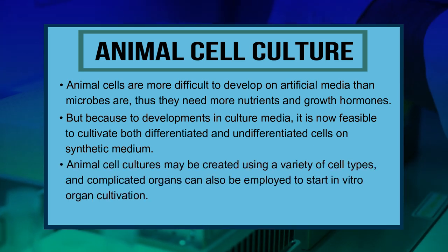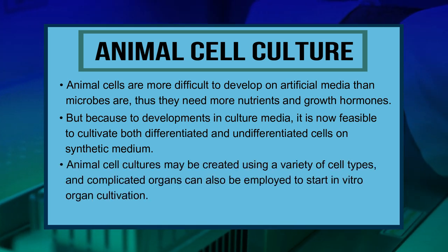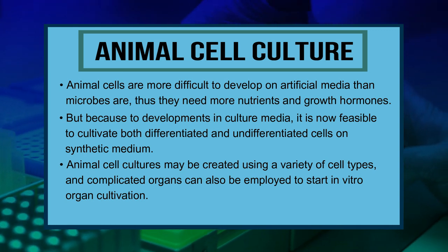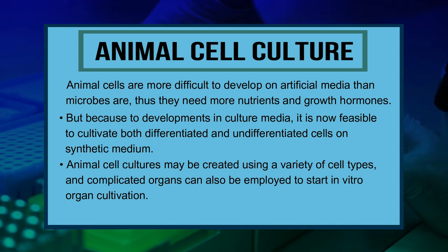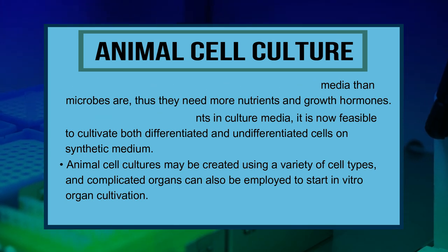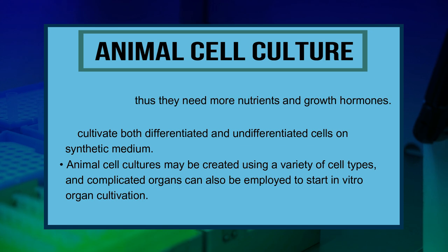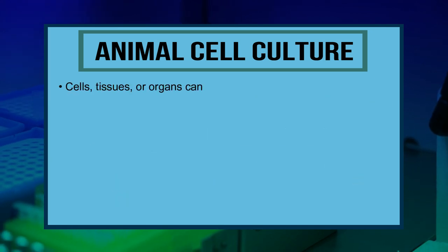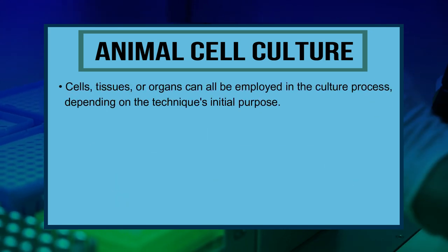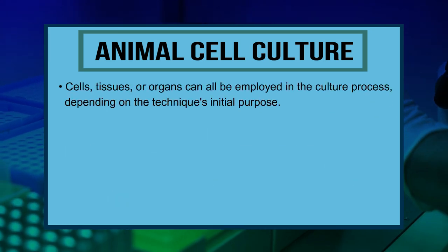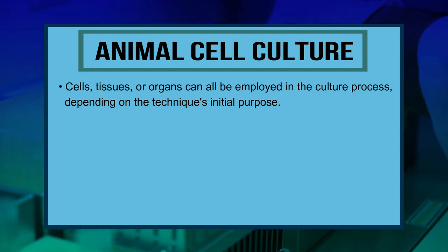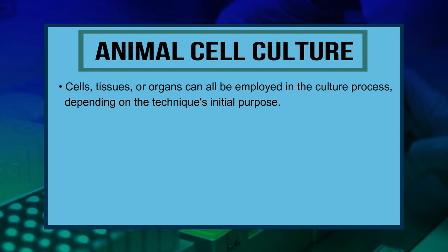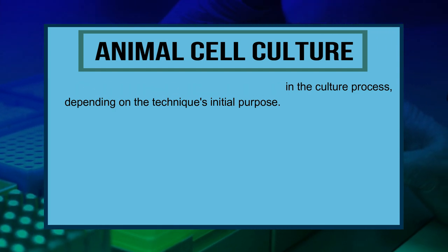Animal cell cultures may be created using a variety of cell types, and complicated organs can also be employed to start in vitro organ cultivation. Cells, tissues, or organs can all be employed in a culture process depending on the technique's initial purpose.